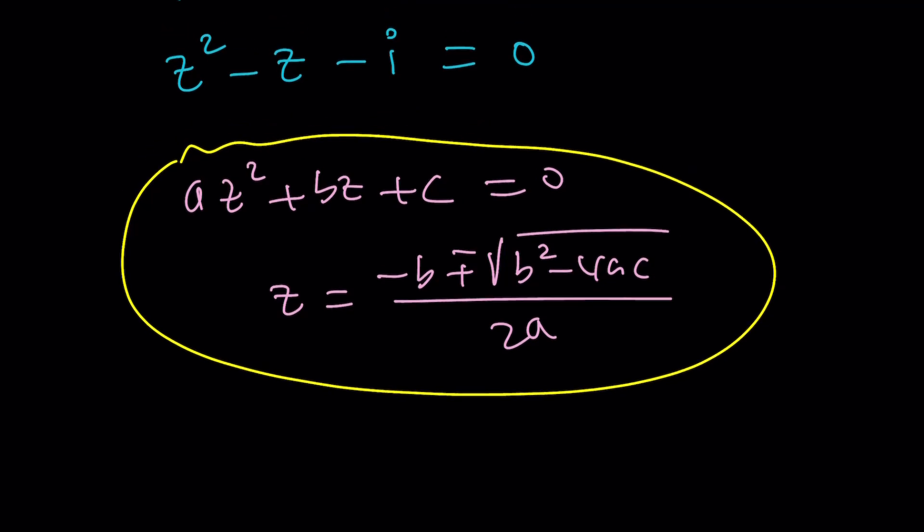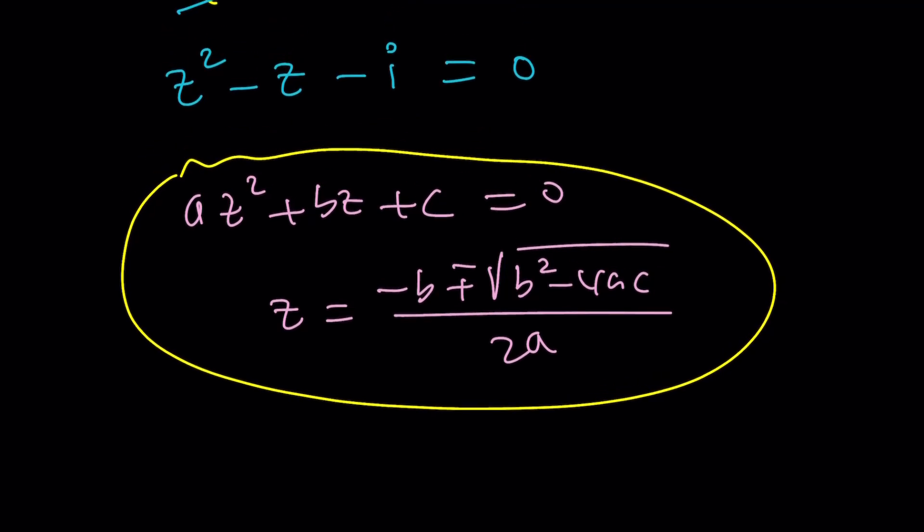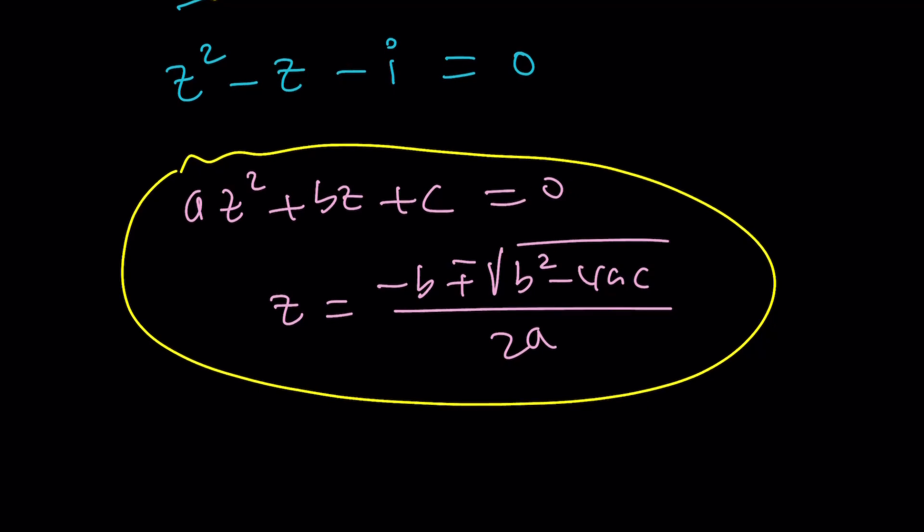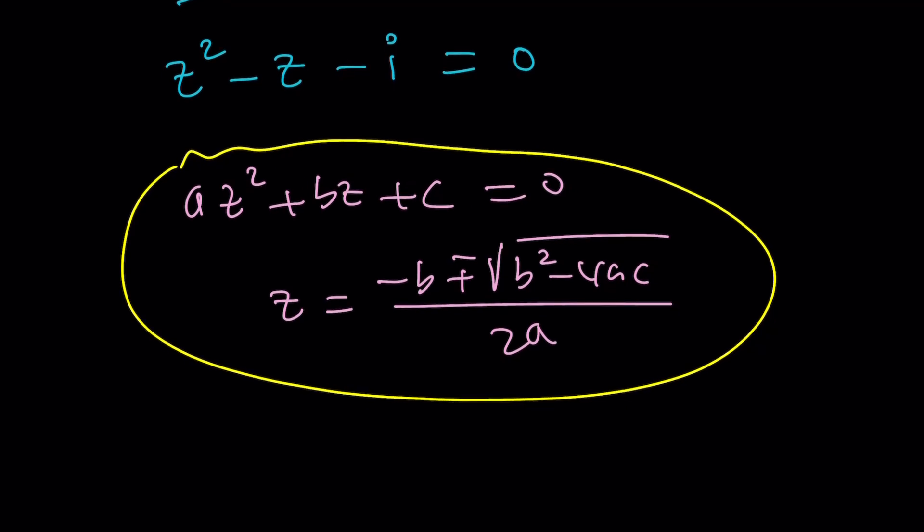We have a quadratic equation with complex coefficients or imaginary coefficients, which means we're not going to have real solutions. From here, z is going to be negative b, which is 1, plus minus the square root of b squared, which is 1, minus 4 times a, which is 1, times c, which is negative i. So it's going to be 1 plus 4i.